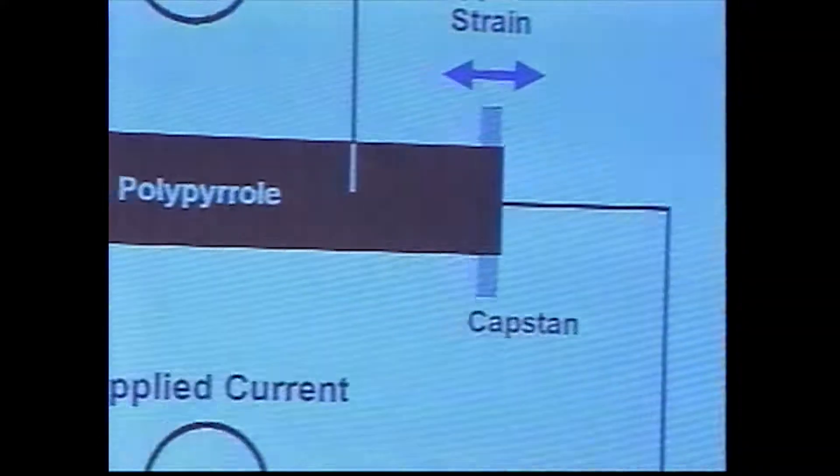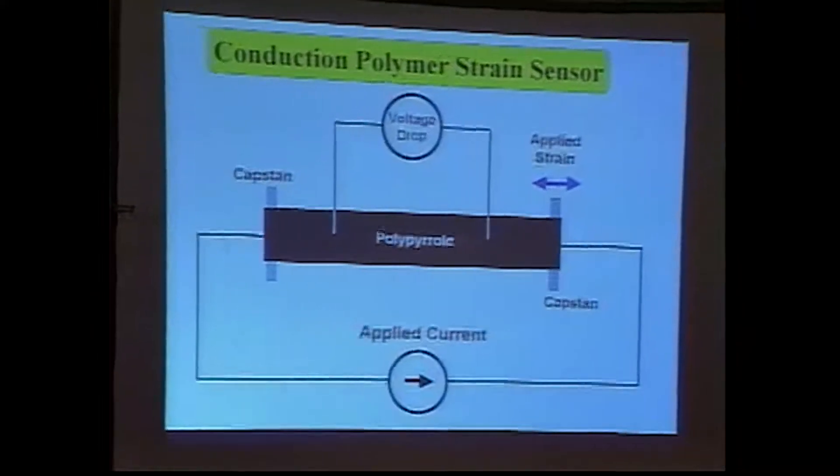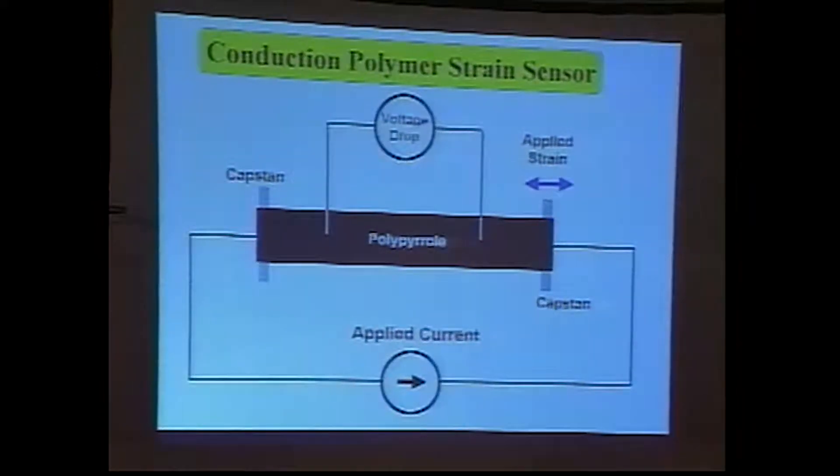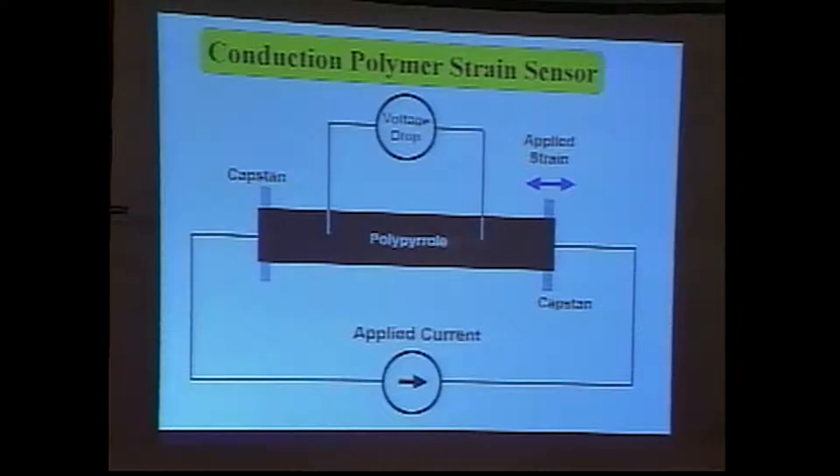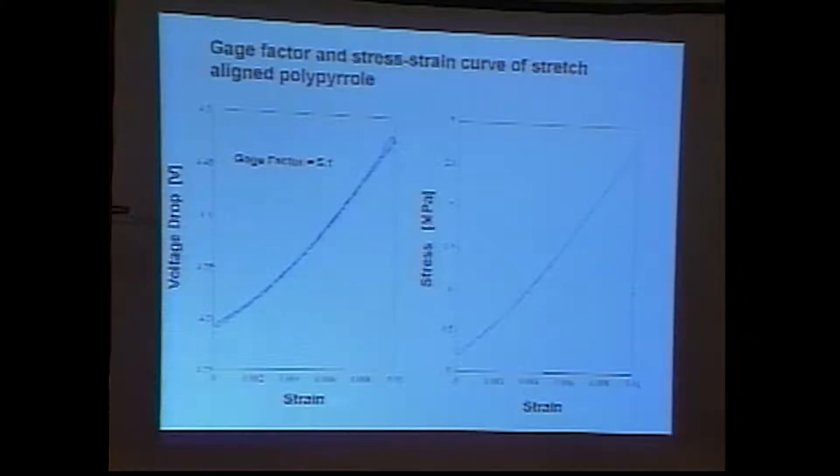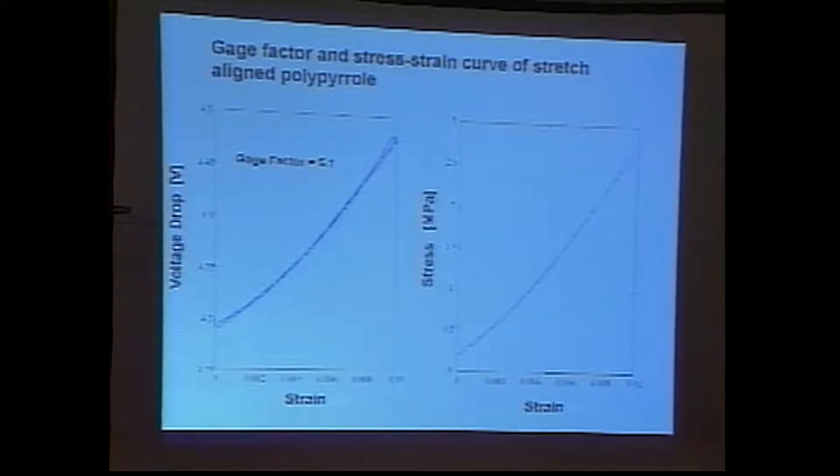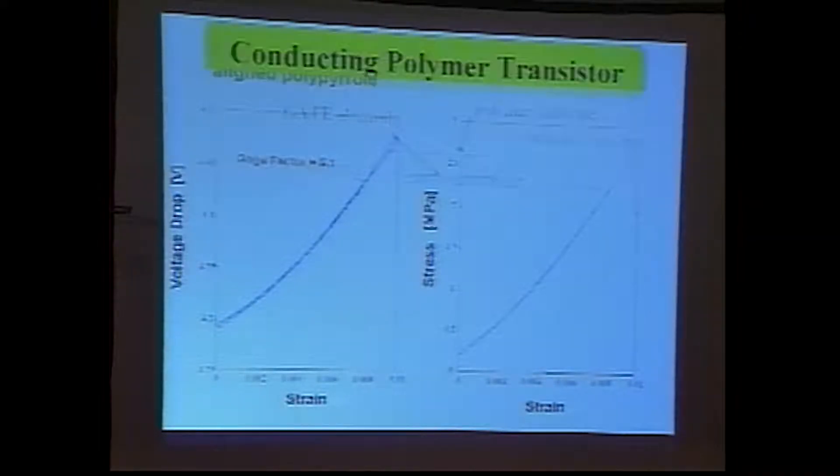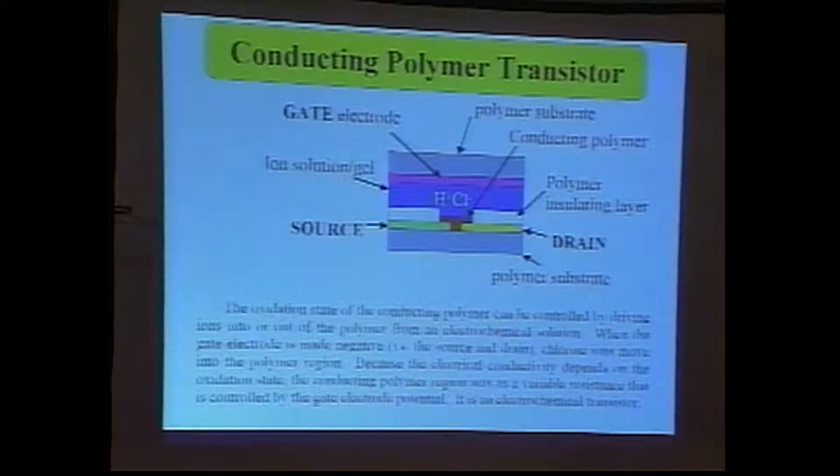So we grow these materials in the lab electrochemically. Here's an example of one of the applications of the technology. It turns out that if you strain the material, you can set it up to act as a strain gauge, a useful sensor for many applications. We found that we've got moderately high gauge factors in the order of about five.